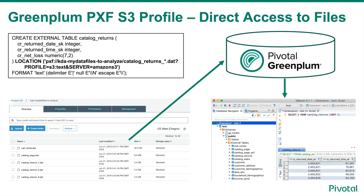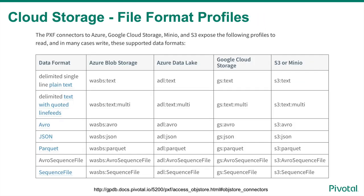As part of the external table definition, when you configure a PXF object store connector, add at least one named PXF server configuration for the connector. In this example, a set of data files located in an Amazon S3 bucket are read in parallel when a user executes a query against the external table defined in the Greenplum database. The PXF connectors to Azure, Google Cloud Storage, Minio, and S3 expose profiles to read, and in many cases write, supported data formats. Provide the profile name when you specify the PXF protocol on a Create External Table command.